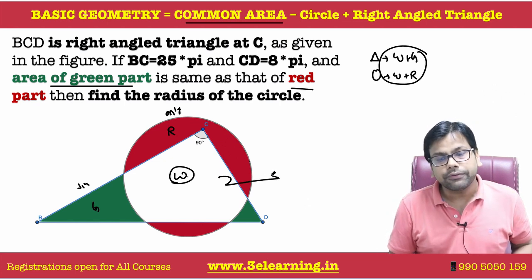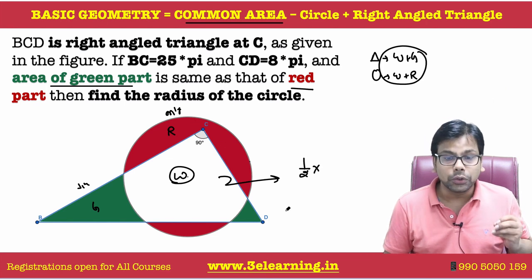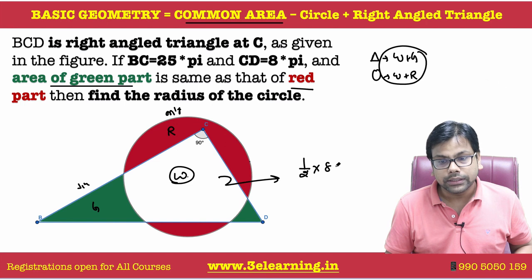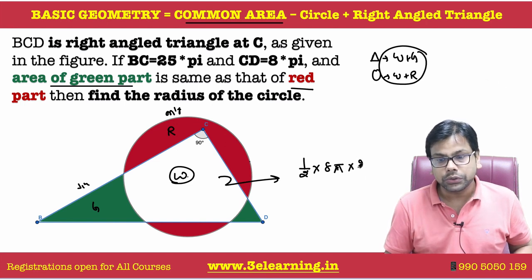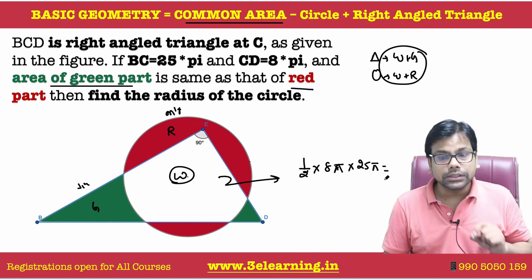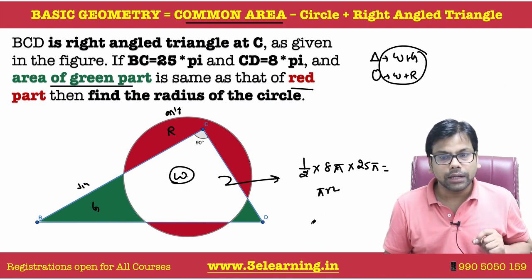What is the area of the right-angled triangle? The area of the right-angled triangle is equal to half into base, which is given as 8π, into perpendicular, which is 25π. This is our area. What is the area of the circle? It's nothing but πr².